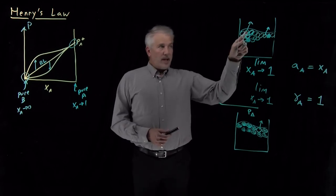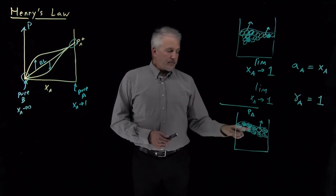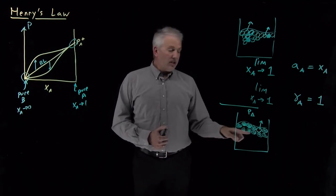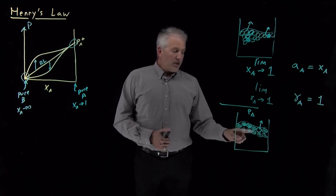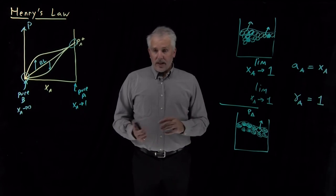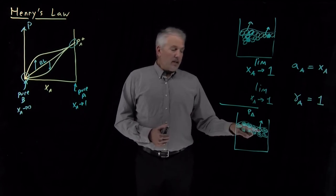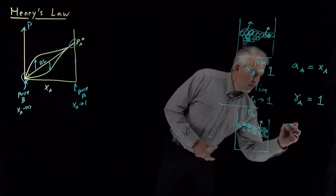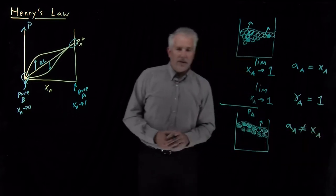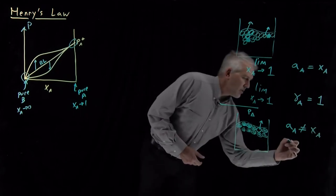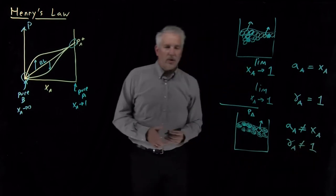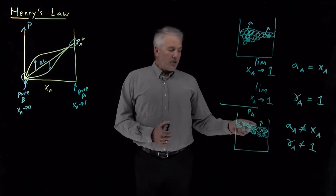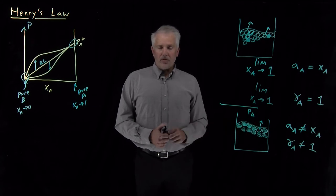Unlike the nearly pure solvent case where A molecules behave like A in pure solvent, here each A molecule is surrounded by B molecules and will behave nothing like a molecule in pure solvent. If B molecules bind to A more or less tightly than A binds to itself, there is no reason to expect the activity of A to resemble the mole fraction of A. Likewise, there's no reason to expect the activity coefficient to be near one — the solution won't be ideal in this dilute limit.